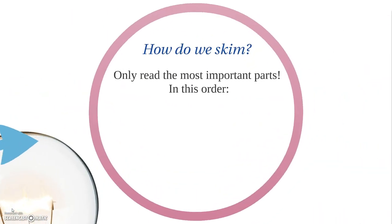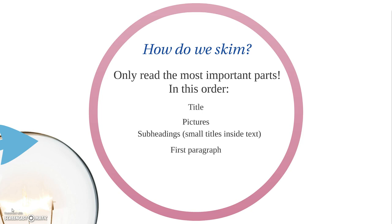Now, how do we skim? It's simple. We only read the most important parts and we read them in a special order. First, the title. Second, pictures, if our reading has pictures. Then we look for subheadings — these are like small titles inside of our text or reading. Then we want to read the whole first paragraph. Then we just read the first sentence of all the other paragraphs. Finally, we'll read the last paragraph. After we look at all of these things in this order, we should quickly have a main idea of the article or text that we're looking at.